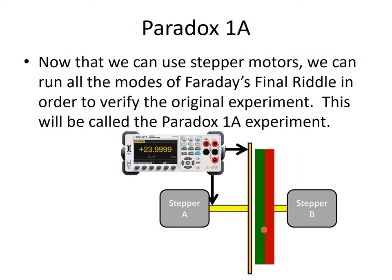That allows us to buy a good precision DMM that can measure millivolts or microvolts more accurately. For Paradox 1A, because we can use stepper motors and get meaningful measurements at slow speeds, and because slow stepper motors allow us to synchronize the motion of two separate things, we can synchronize the motion of a magnet and a disc. We can run all the different modes of Faraday's final riddle experiment: mode zero where neither is turned, mode one where only the disc runs, mode two where only the magnet runs, and mode three where both run at the same speed — matched very precisely with the stepper motors.